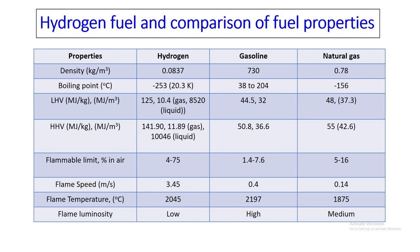The higher calorific value is about 142 MJ/kg in case of hydrogen, gasoline is 50.8 and natural gas is 55. The flammability limit in case of hydrogen is very wide — it varies from 4 to 75, whereas for gasoline it is 1.4 to 7.6 and natural gas it is 5 to 16. The flammability limit defines the amount of combustible gas in an air mixture when the mixture is flammable.